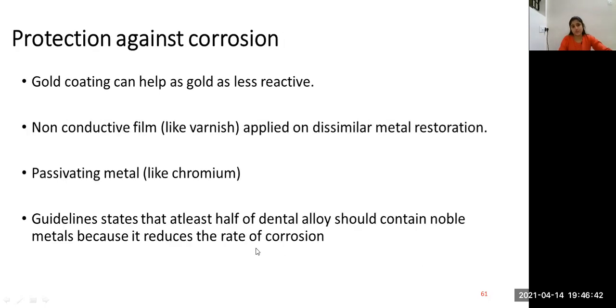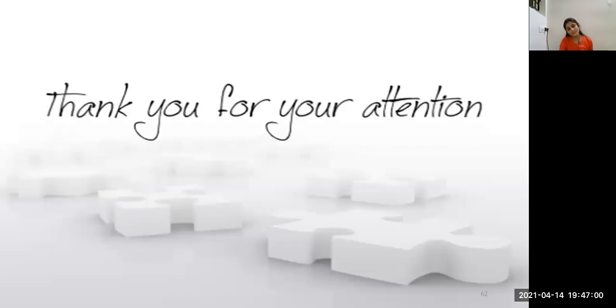Protection against corrosion. Gold coating can help as gold is less reactive. Non-conductive film like varnish is applied on dissimilar metal restorations. Passivating metals like chromium can be applied. And guidelines state that at least half of the dental alloys should contain noble metals because it reduces the rate of corrosion. Thank you for your kind attention.